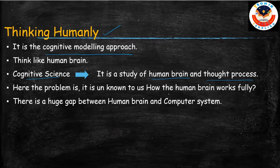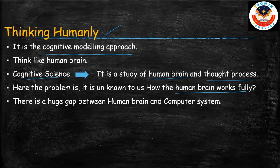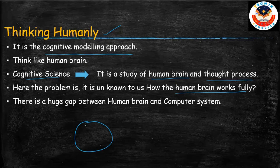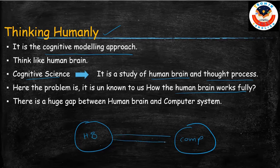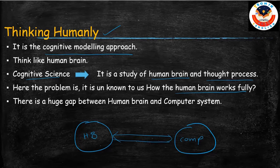But there is a problem here: we don't fully know how the human brain works. Research on the human brain is still ongoing. So in such a situation, how can we make a computer also think like a human? There is a huge gap between the human brain and the computer. Since we don't yet know exactly how the human brain works, it is very difficult to program that into a computer. That is what thinking humanly is.